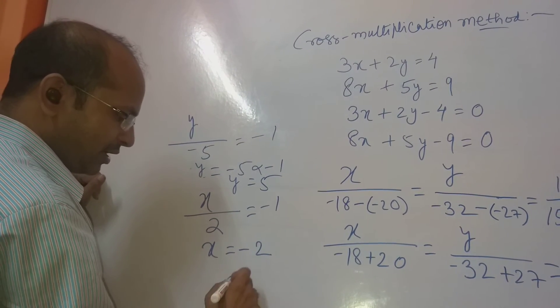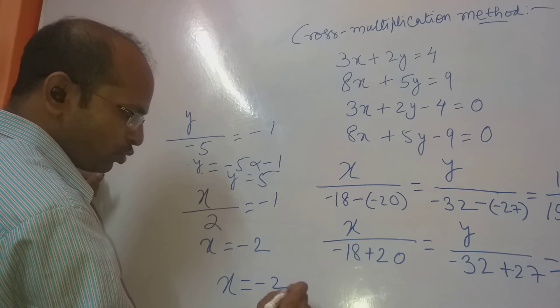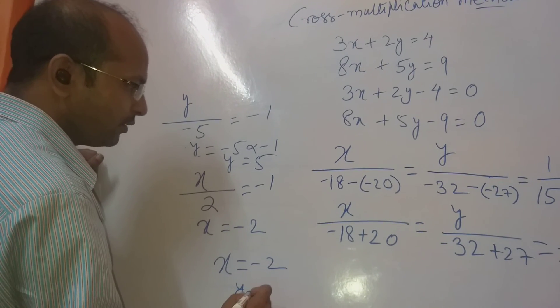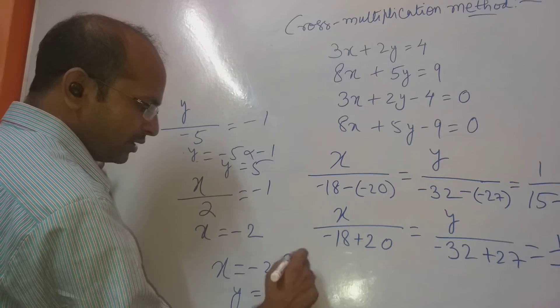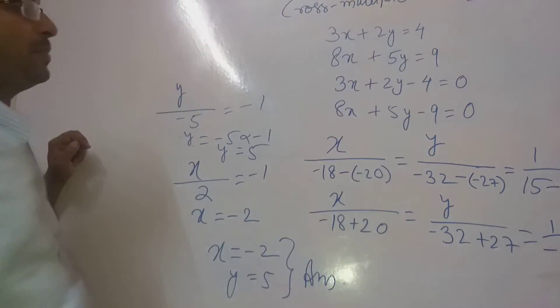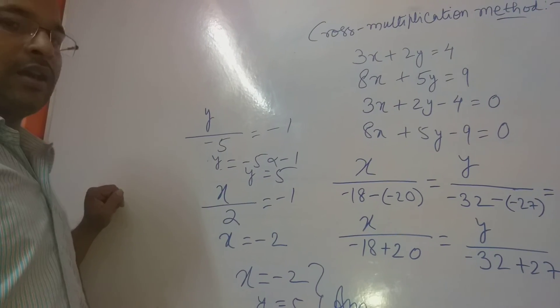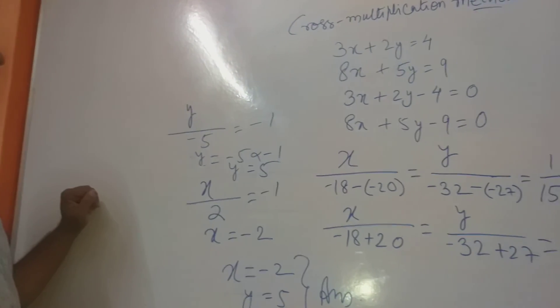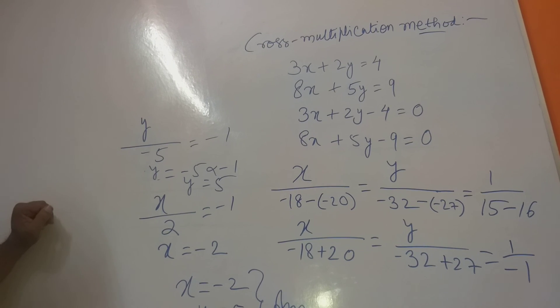So what are we getting? Ultimately, x as minus 2 and y as 5. This is the way to do the sum by using cross multiplication method. You can take a screenshot if you want. Thanks for watching the video.